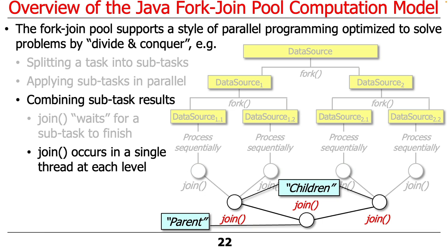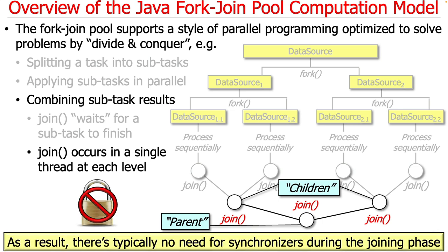Notice that join occurs in a single thread at each level — it always works by taking results from two sub-results and joining them in a single thread. Because of the way this framework is cleverly designed, there's typically no need for synchronization during the joining phase. There is something called a concurrent collector in parallel streams that does require synchronizers, but that's a different variant. In general, joining takes place without application-level synchronizers. Under the hood there's all kinds of clever stuff using compare-and-swap operations in the JVM, but you mercifully don't need to care about that level of detail.